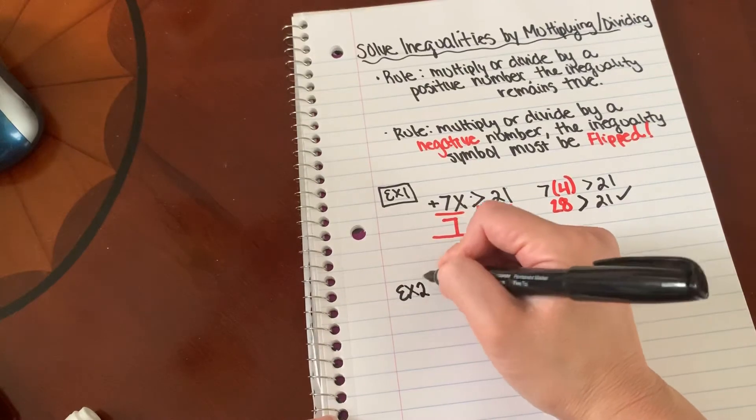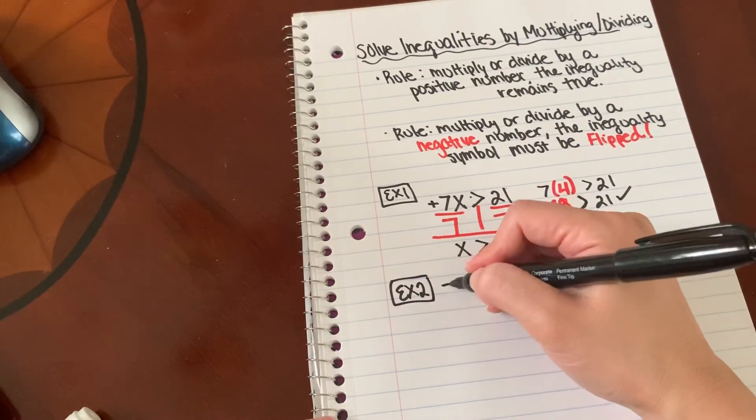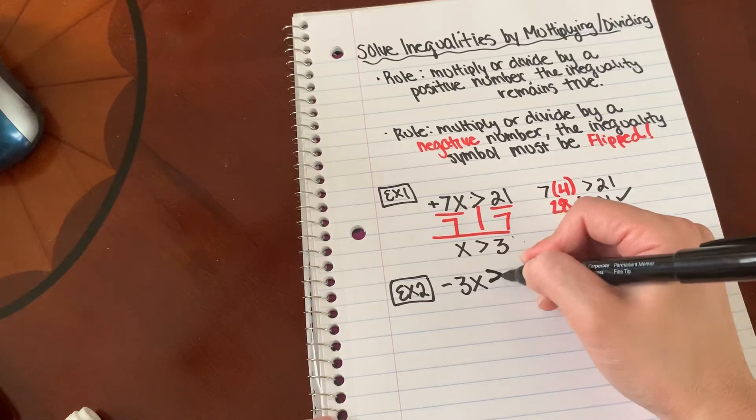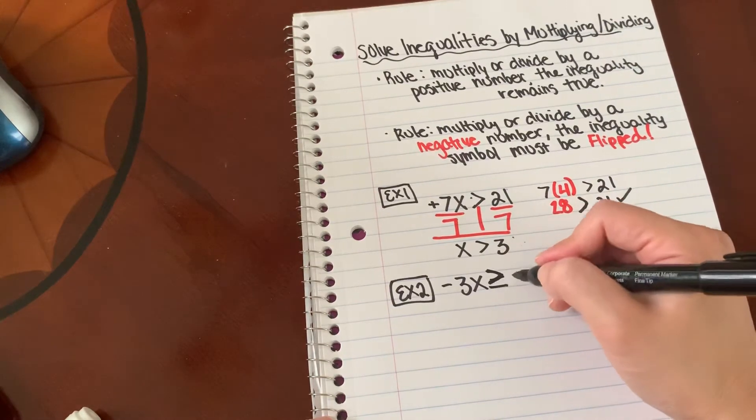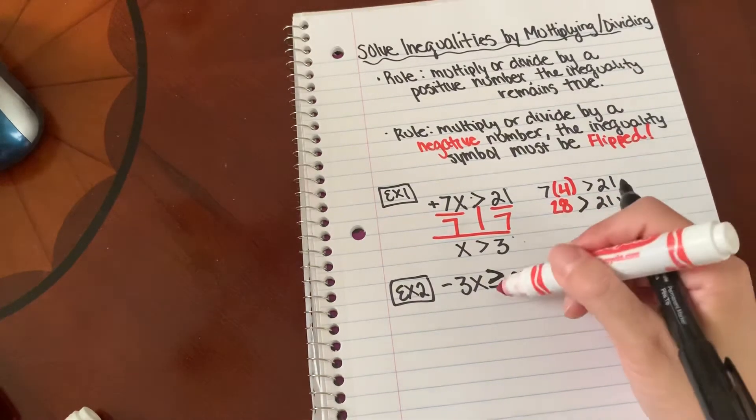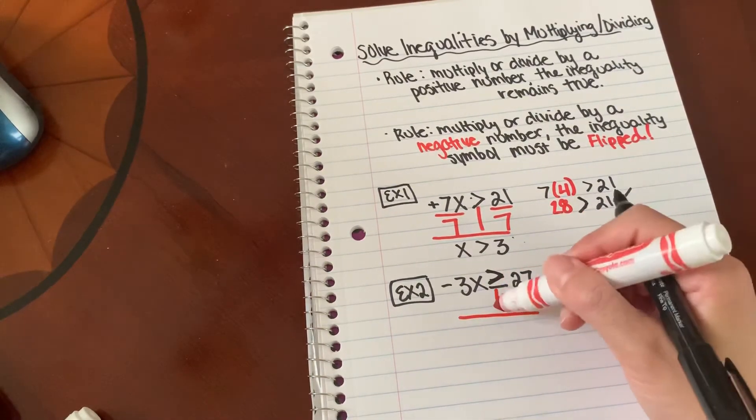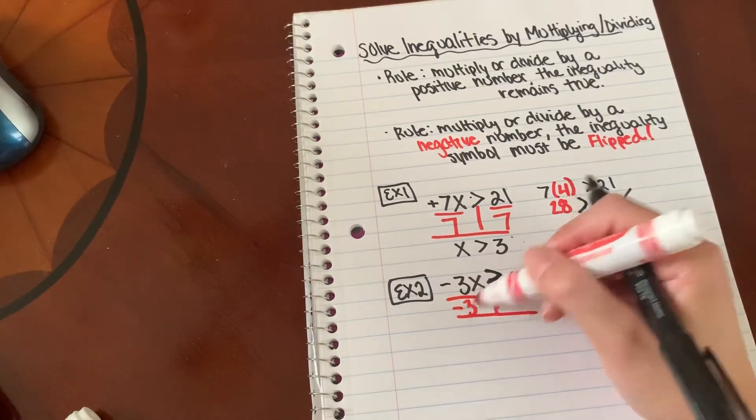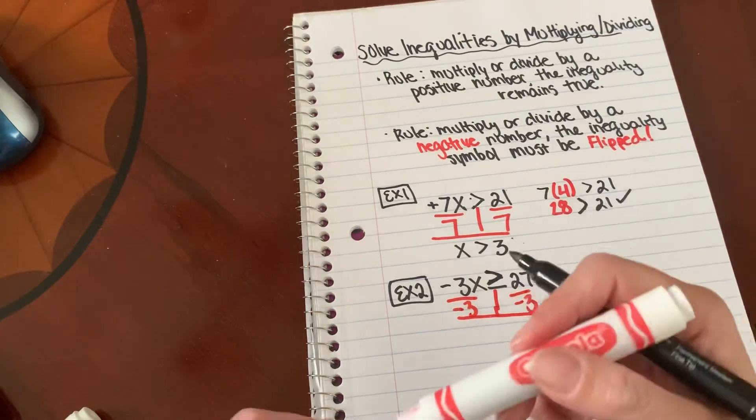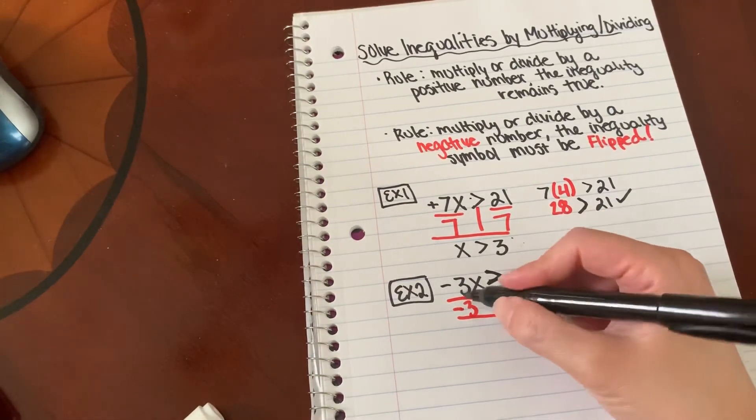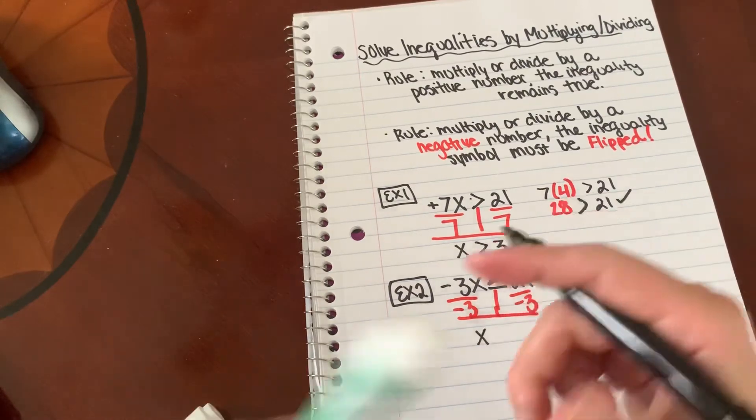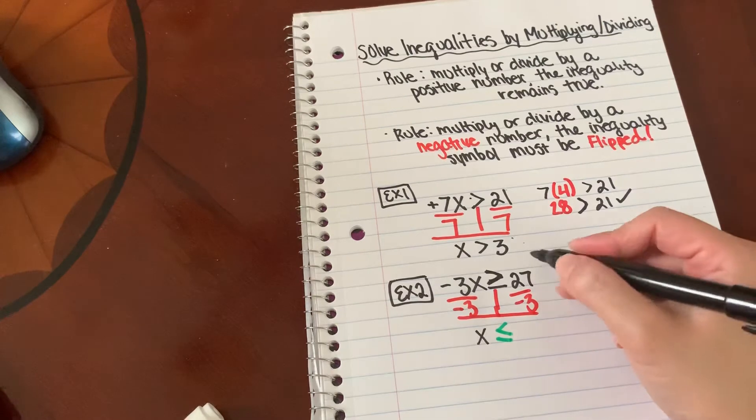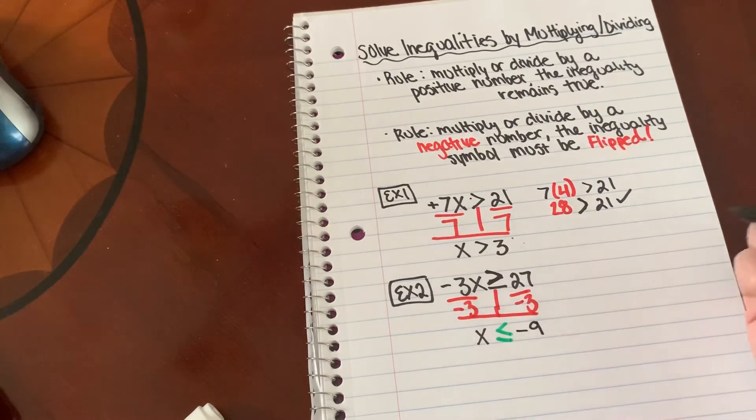Okay, if I have negative 3x is greater than or equal to 27, I can go ahead and t-chart this. What is the inverse of negative 3 times x? That's going to be divided by negative 3. So notice, since I'm dividing by a negative number, I'm going to flip my inequality. So 27 divided by negative 3 is negative 9.